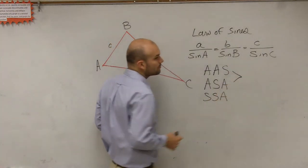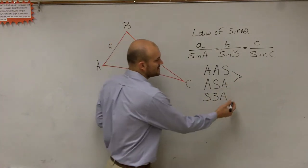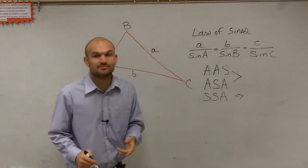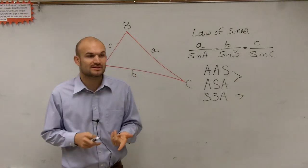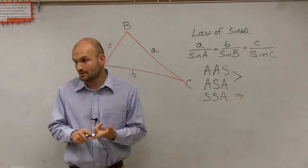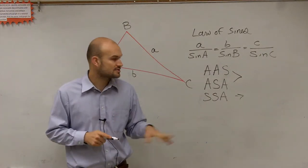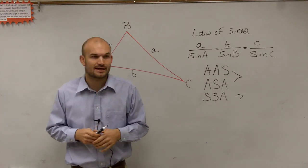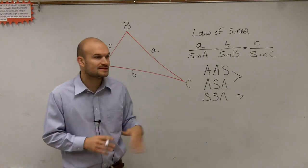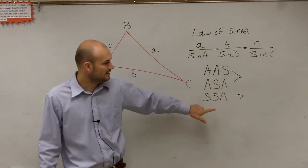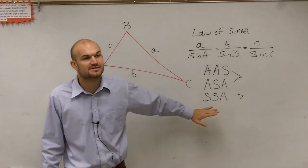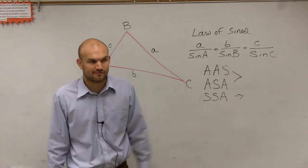So today what we're going to do is we're just going to work on these first two cases. We'll get to this one, which has the possibility of being what we call our ambiguous case. You can either have no triangle, or two triangles, or one triangle with the side-side-angle. So we're just going to work on these two. These will give you exactly one triangle. This is what we call our ambiguous case, where we'll work on that next class period when we have a little more time.